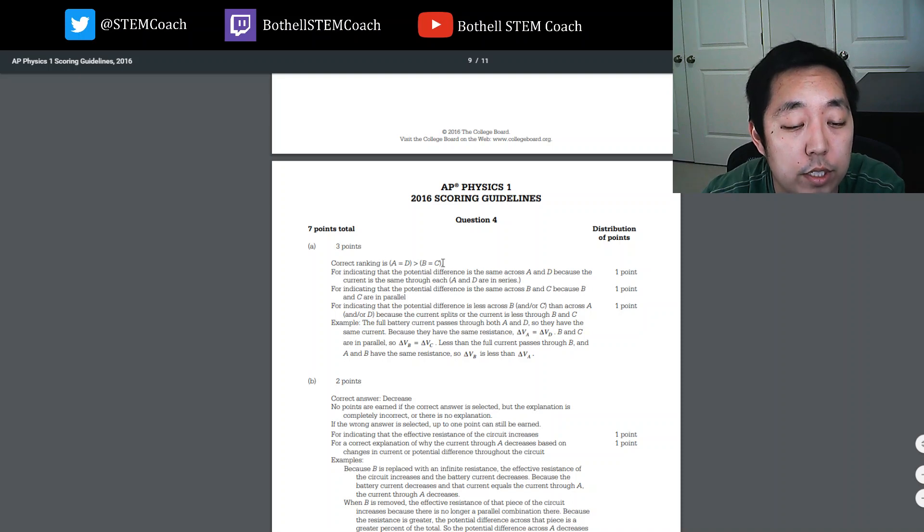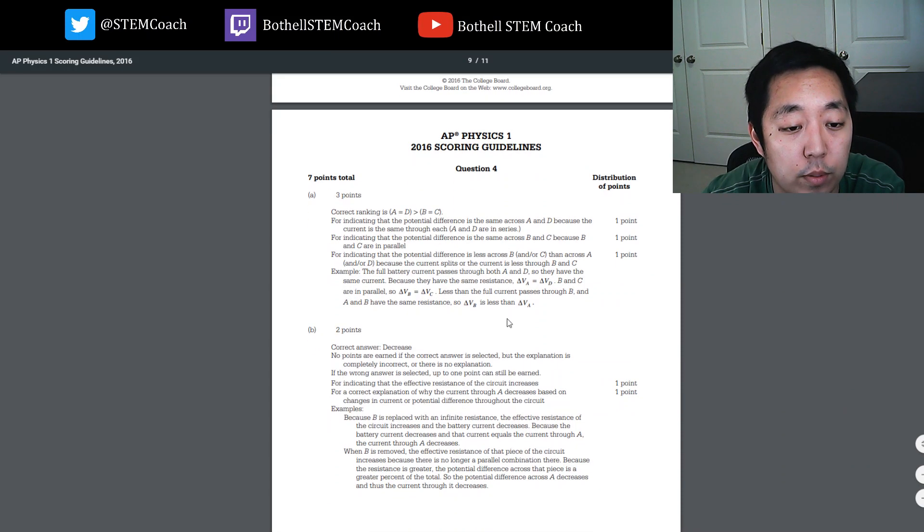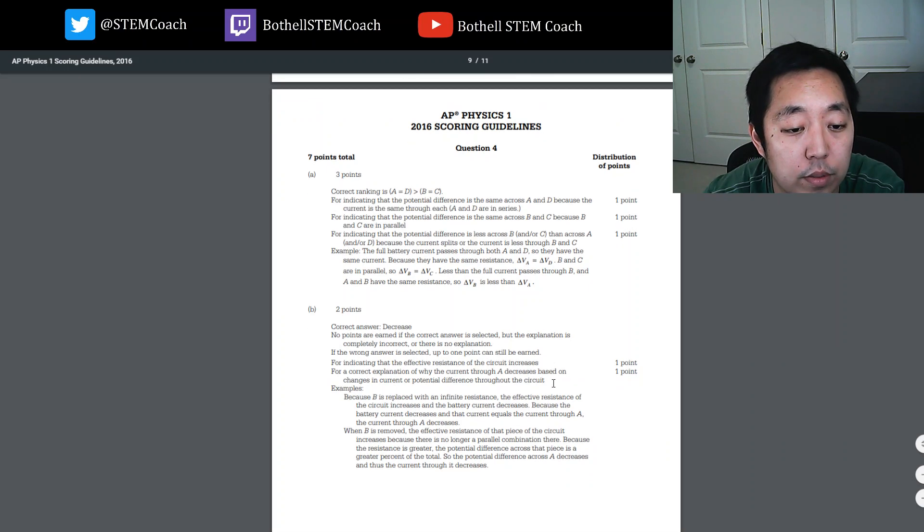Okay, let's take a look at the scoring guidelines. A equals D greater than B equals C. And I explained that that one's pretty easy. Decrease for indicating the effective resistance circuit increases. For correct to determine why the current through A decreases based on changes in... Okay, so...